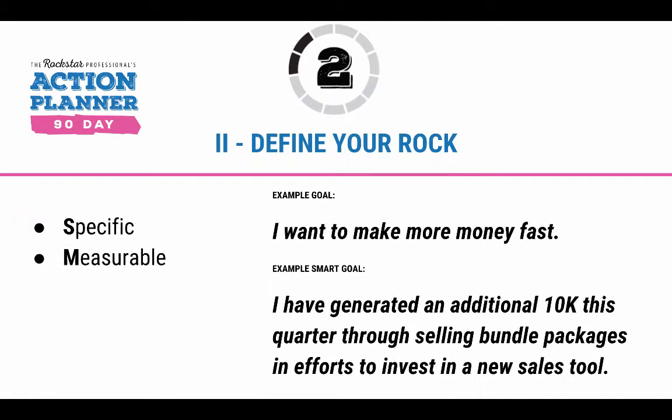Next, when you look at your goals, you want to make sure that they're in the SMART format. Just take a moment to look over and make sure that they're specific, measurable, attainable, relevant, and timely. An example of a non-SMART goal would be: 'I want to make more money fast.' That's great, but it's not a SMART goal. A SMART goal would be: 'I've generated an additional $10K this quarter through selling bundle packages in efforts to invest in a new sales tool.' Now that is a SMART goal.